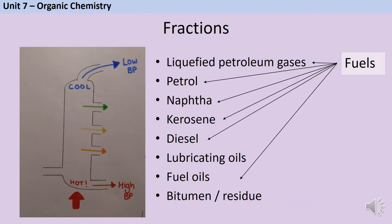Crude oil can be separated into various different fractions including liquefied petroleum gases or refinery gases, petrol, naphtha, kerosene which is used as jet fuel as well as a fuel in people's homes, diesel, lubricating oils, fuel oils and bitumen or residue.